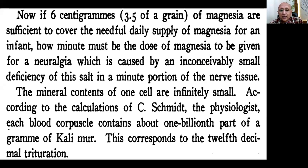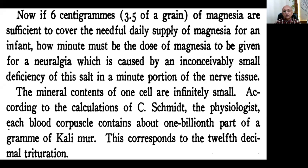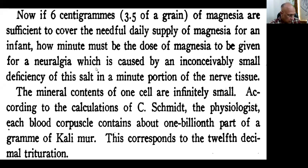The mineral contents of cells are infinitely small. According to the calculation of C. Smith the physiologist, each blood corpuscle contains about one billionth part of a gram of Kali Mur. This corresponds to the 12th decimal calculation — one billionth part of a gram of Kali Mur equals 12x potency. That much Kali Mur is required by the body. This is a scientific concept, and that is why this system works according to the doses.